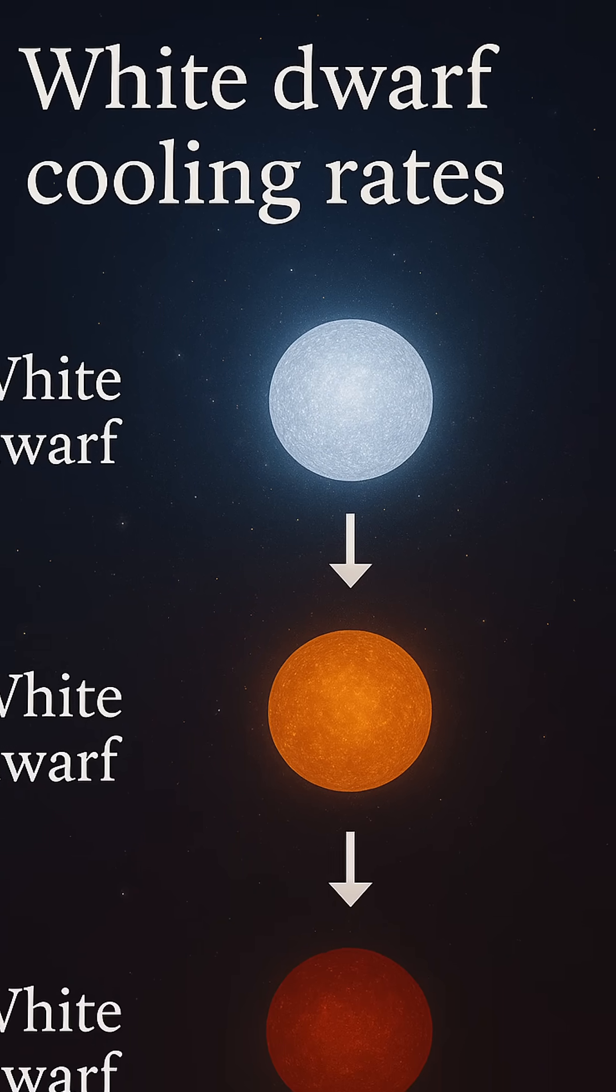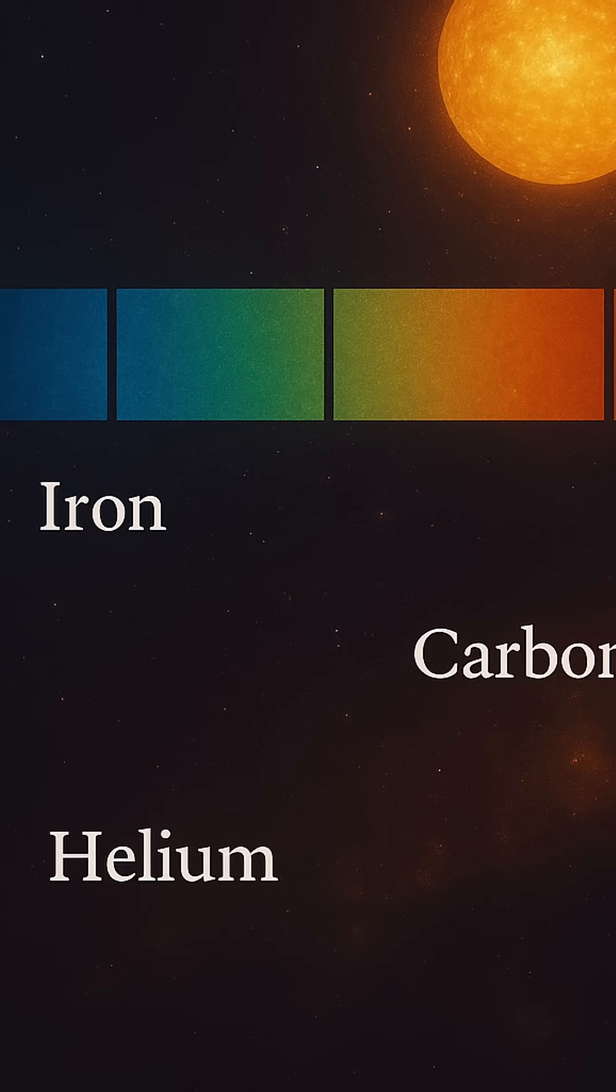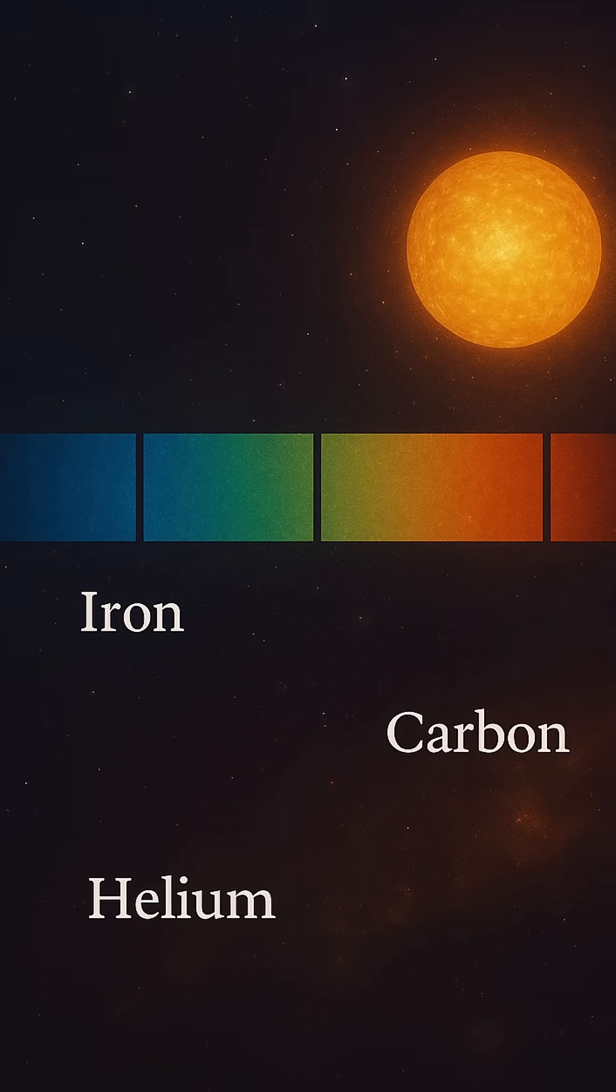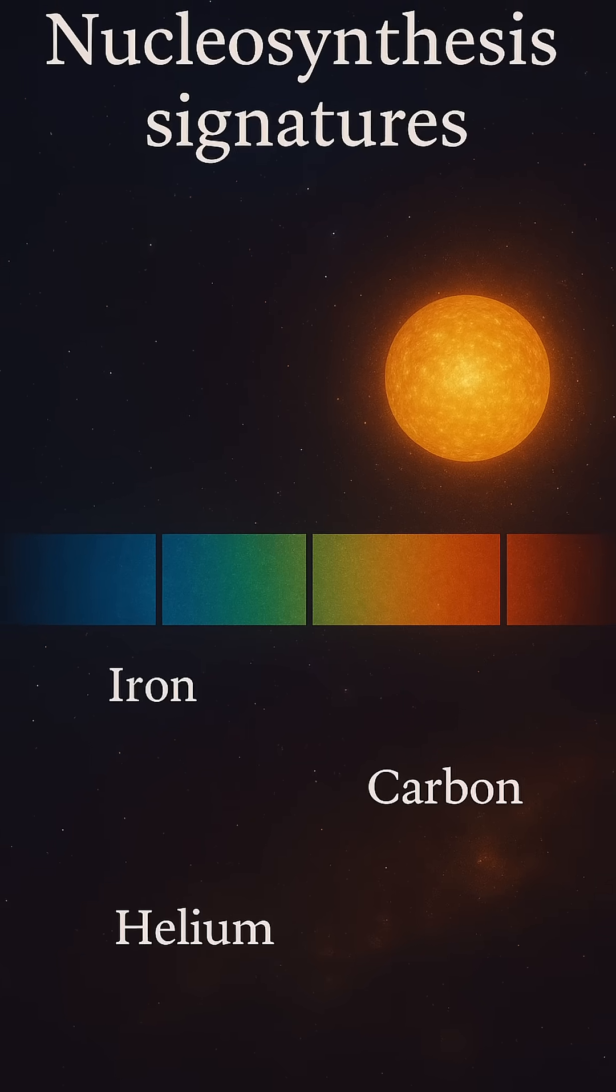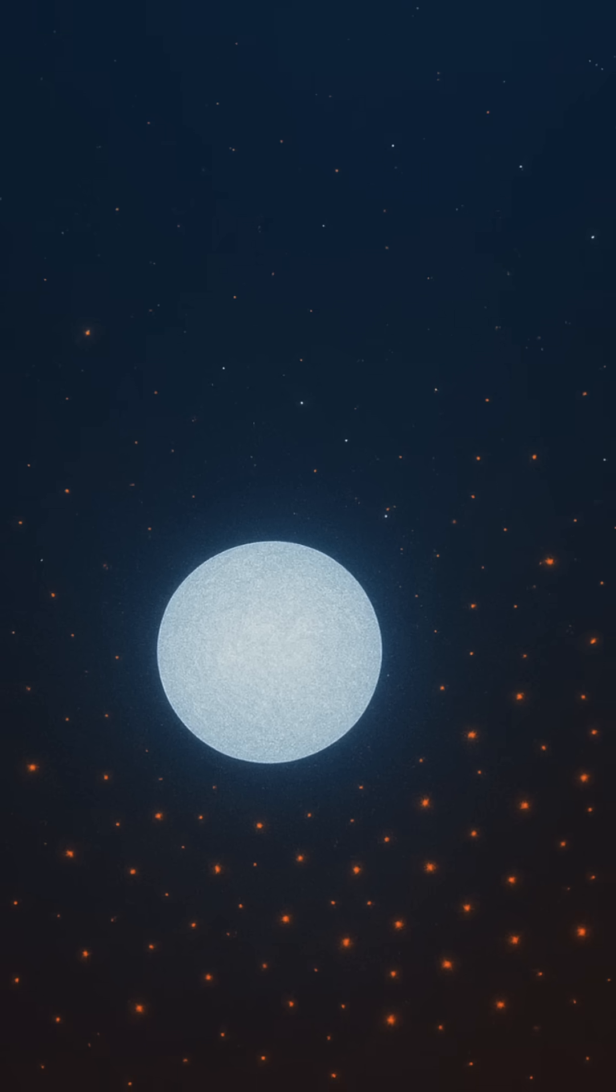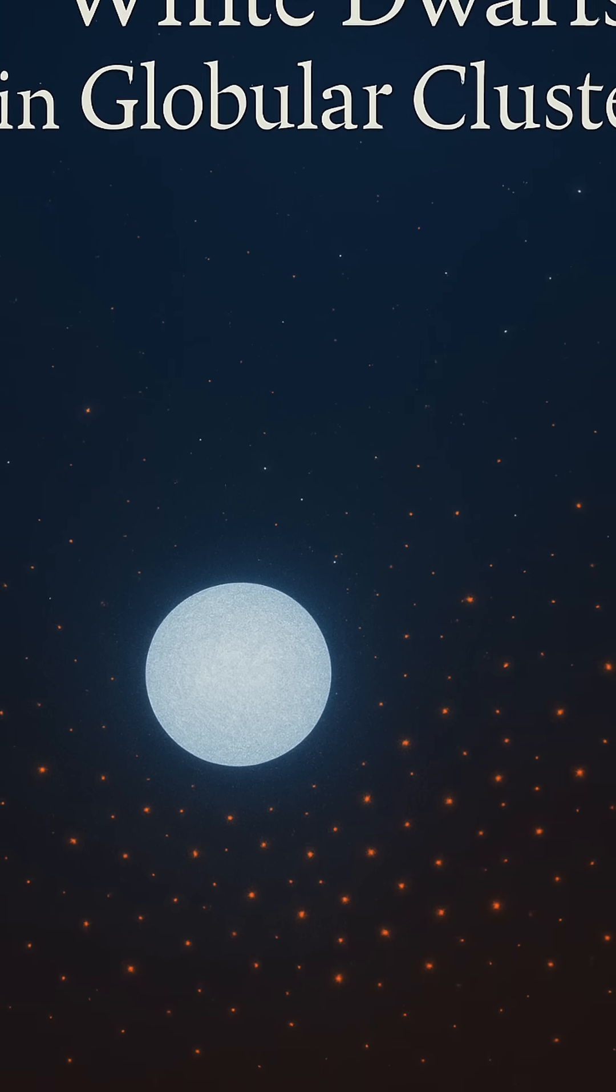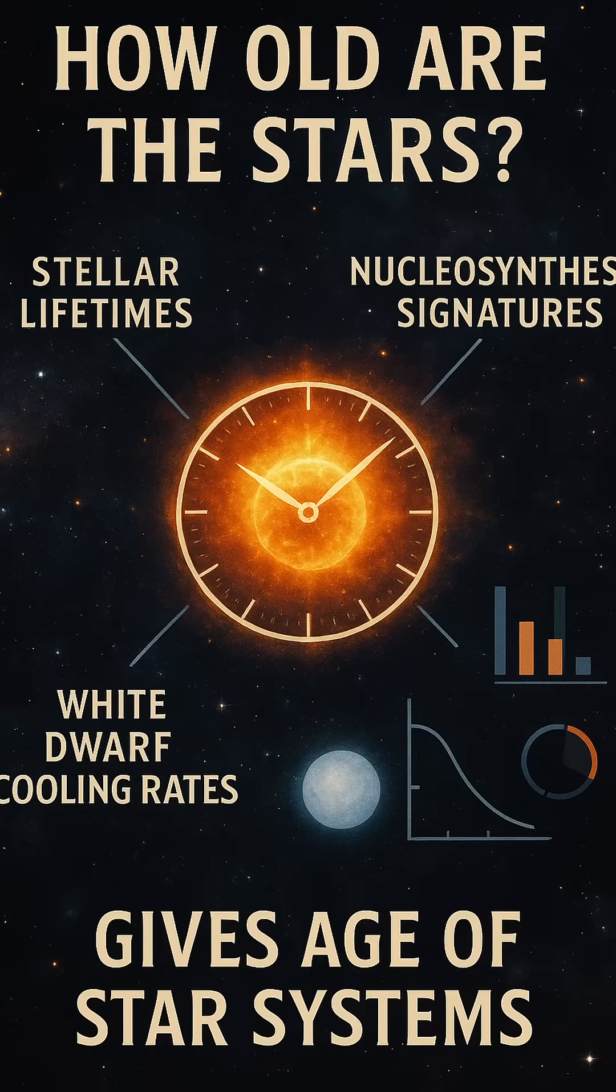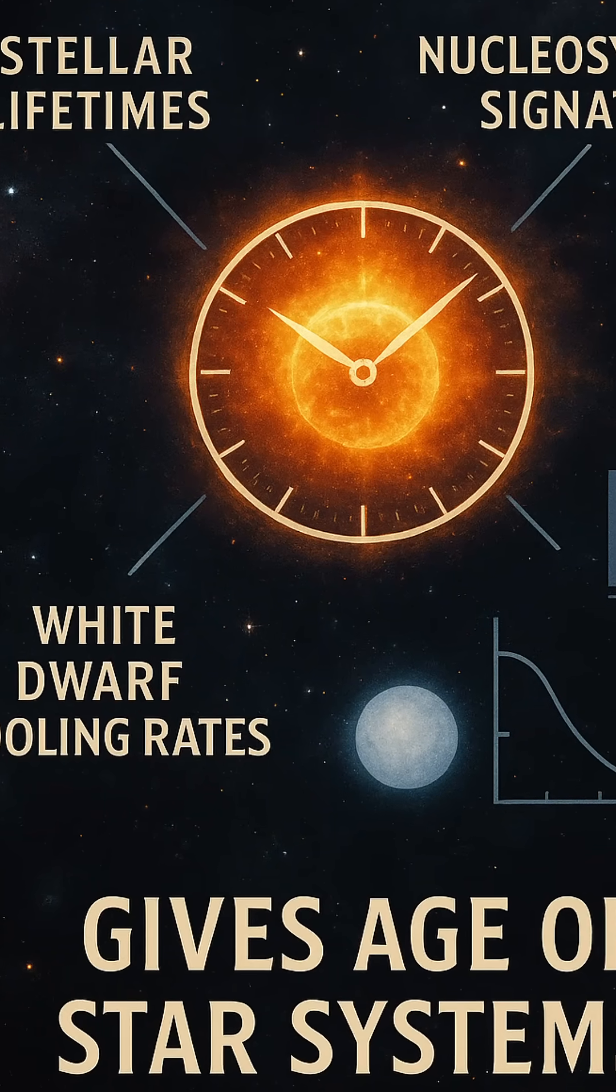Combining all these methods—stellar modeling, elemental signatures, and white dwarf cooling—astronomers can piece together a star's history with remarkable precision. This doesn't just reveal how old an individual star is, but also helps chart the timeline of entire star clusters and even the age of our galaxy. Dating stars is like reading the pages of a very ancient book. Each data point a sentence, each method a different lens, giving us a clearer picture of how the cosmos has evolved over billions of years.